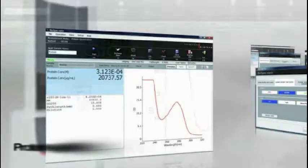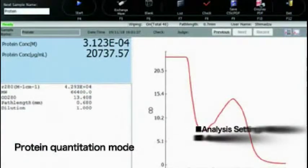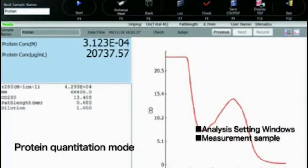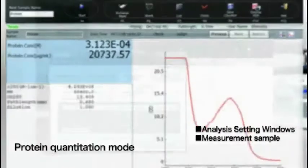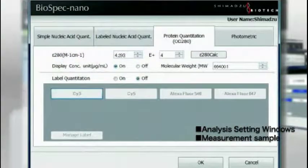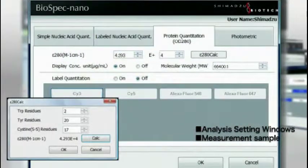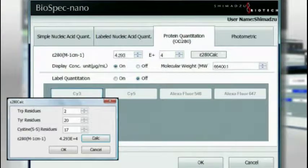And of course, the BioSpec Nano has a protein quantitation mode. Protein concentration is calculated from the peak optical density at 280 nanometers.